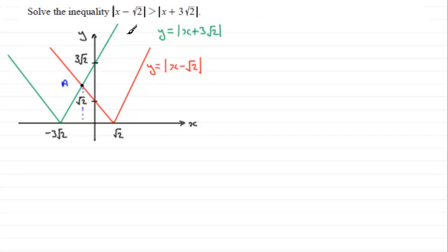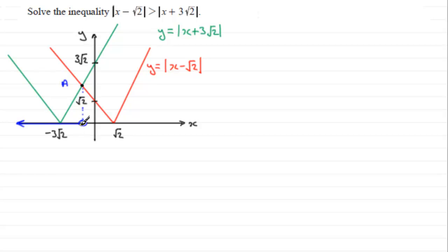When solving the inequality, once we've got this value, all we're looking for is where this graph is greater than the other graph. That occurs for y values in the section where the red graph is higher than the green graph — over the x values going back in that direction, i.e., x values less than this particular x value at point A.